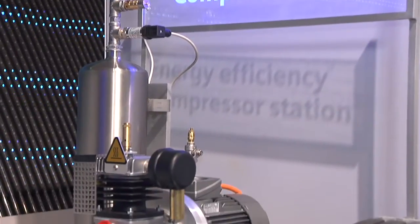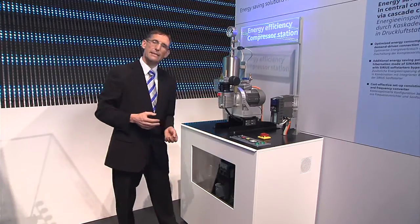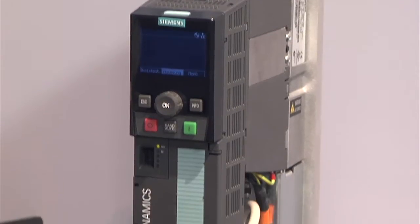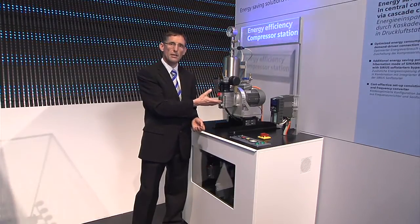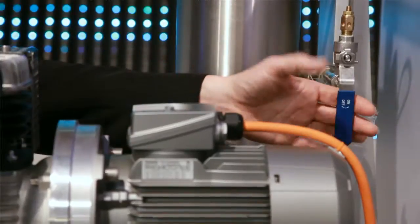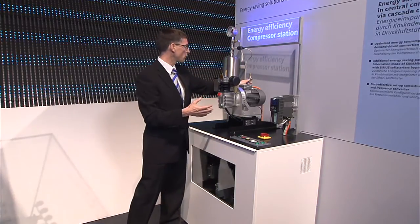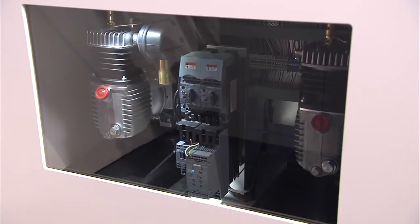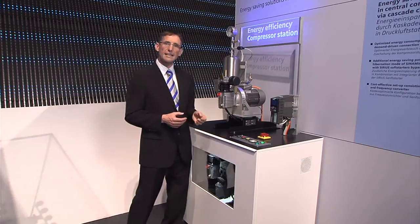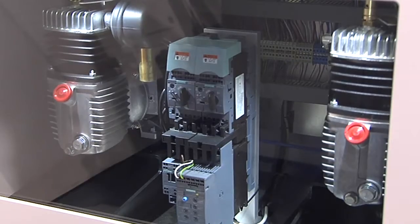We have divided up the compressor power here into three smaller units. The frequency converter, Sinamics G120P, takes on the variable part of the control and controls this compressor here, thus attempting to keep the compressed air requirement at three bar. It also switches on the compressors at the bottom when there is a correspondingly greater requirement for air pressure. The compressors at the bottom are driven by direct switch units, star-delta or soft starters.